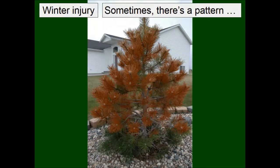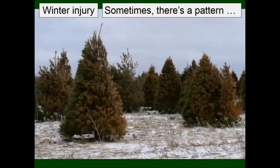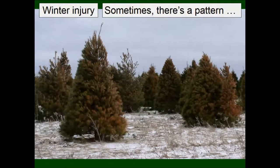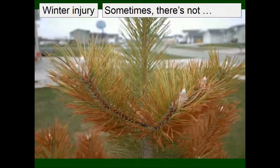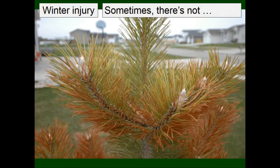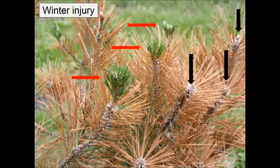On this pine, very low to the ground where there was snow the needles were fine; above the snow line, they're hurting. In this example there's more damage on the right side of the trees than the left — that could be a wind issue or possibly road salt, hard to say. Sometimes there isn't a pattern at all; it can be pretty random, with some needles dead and some alive scattered throughout the branch.